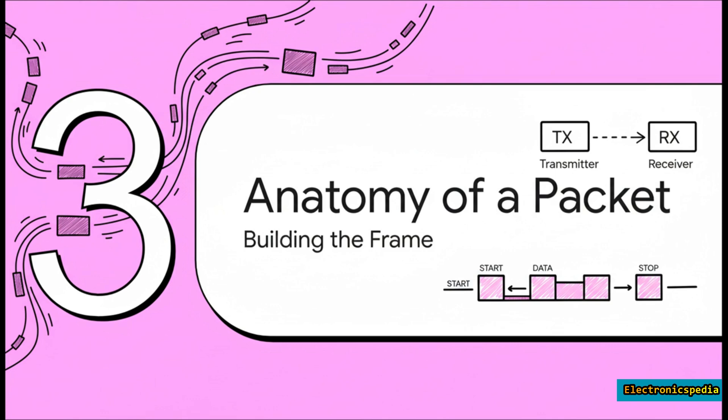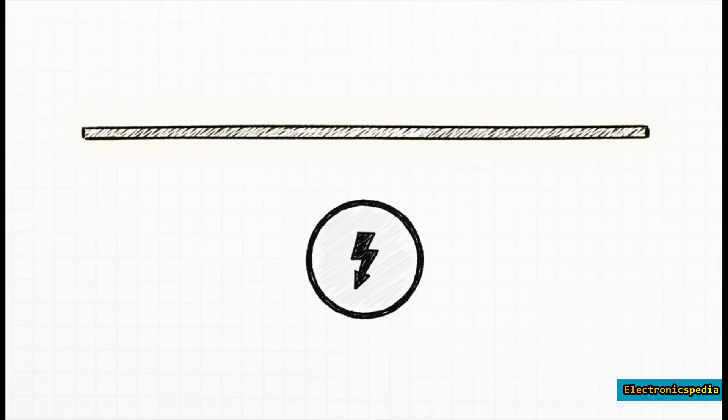So before a single bit of data is sent, the communication line is just sitting there in a high voltage state. We call this a logical one. This is the idle state. Think of it like an open phone line. There's a dial tone—it's silent, but it's ready to go. It tells us the connection is alive and well.